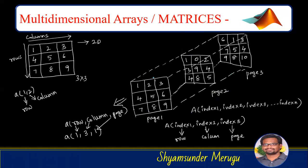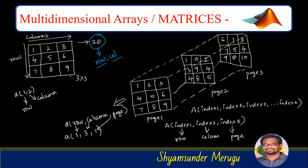Coming to multidimensional arrays — a two-dimensional array has two dimensions: row and column. In any two-dimensional matrix we have rows as well as columns. For example, a matrix with 3 rows and 3 columns uses the indexing format A(row, column), allowing us to access any element at those positions.